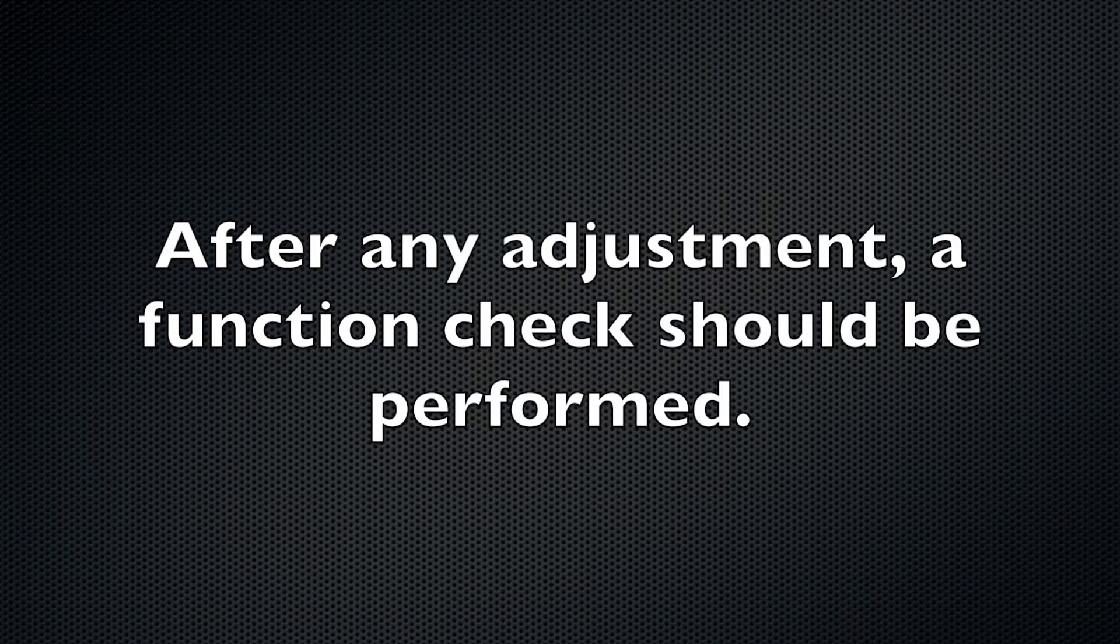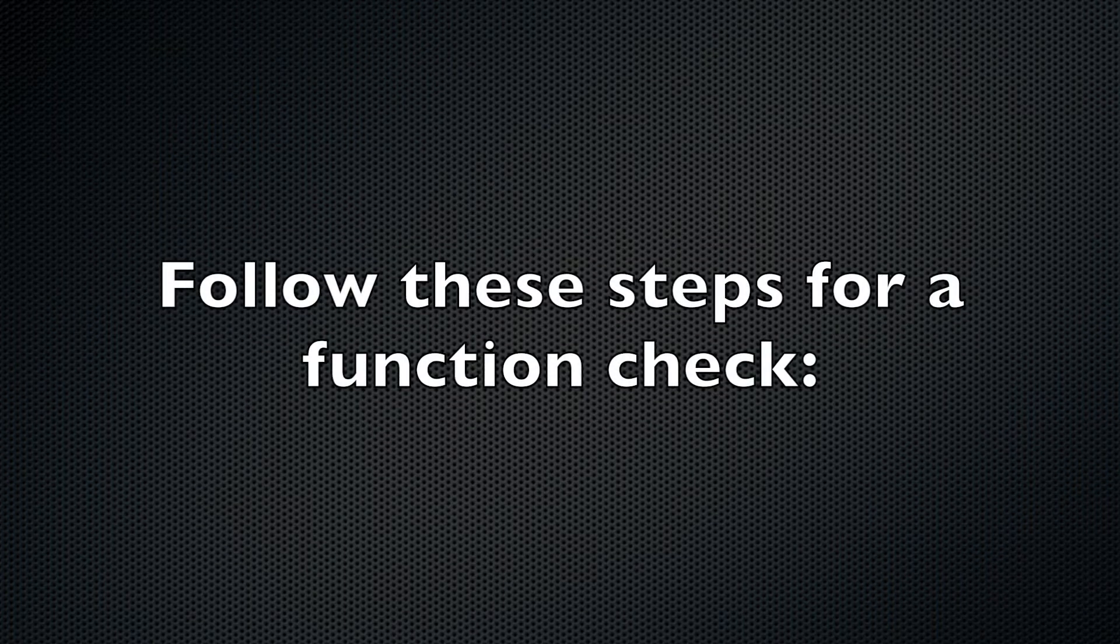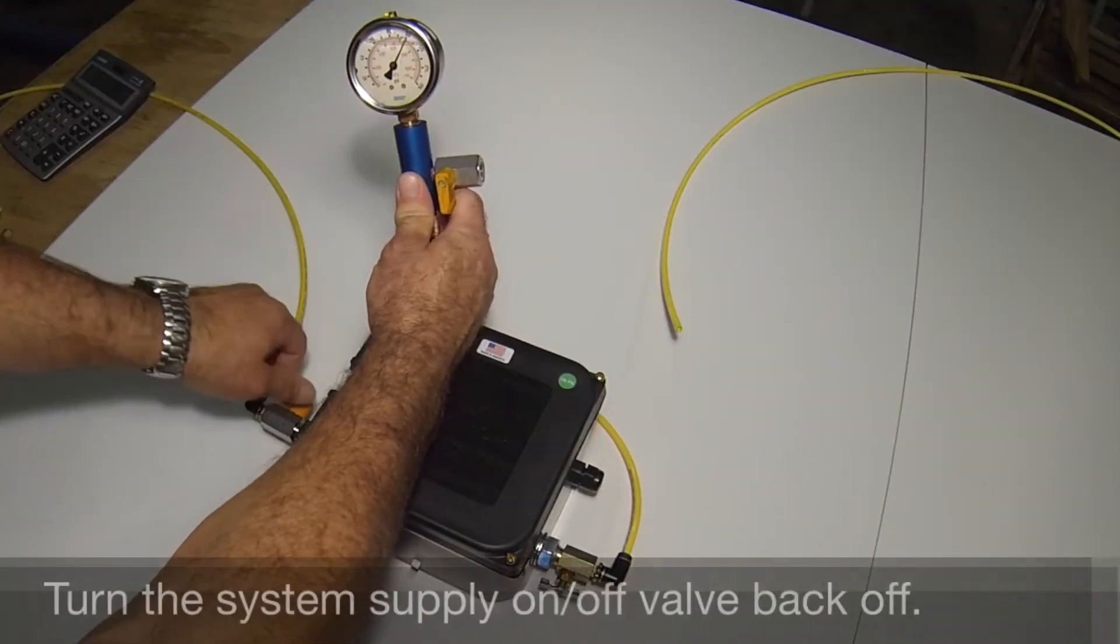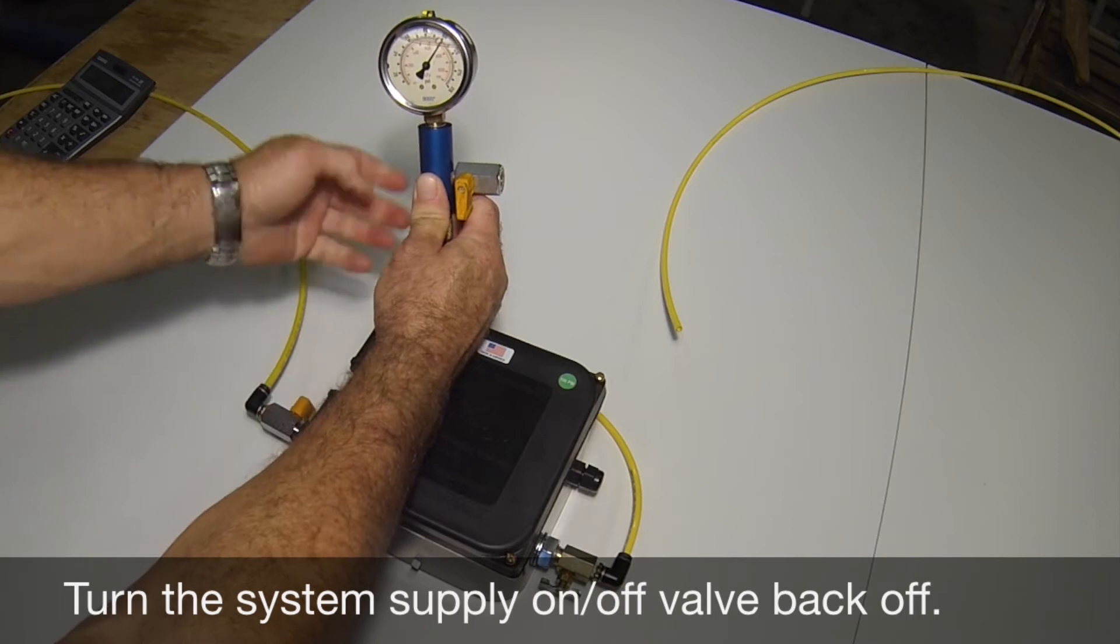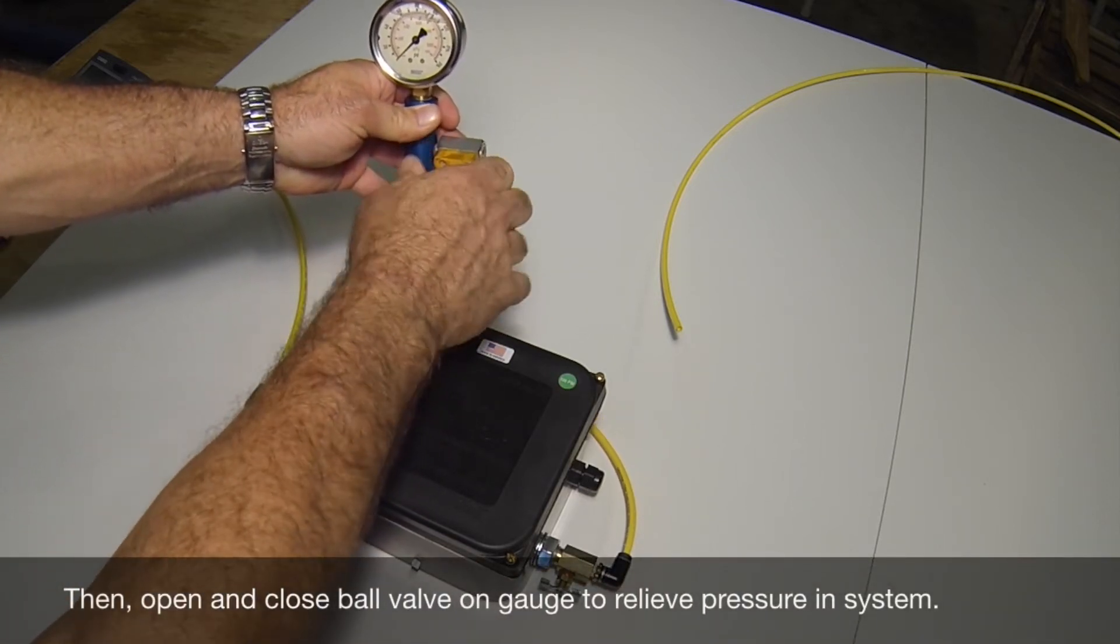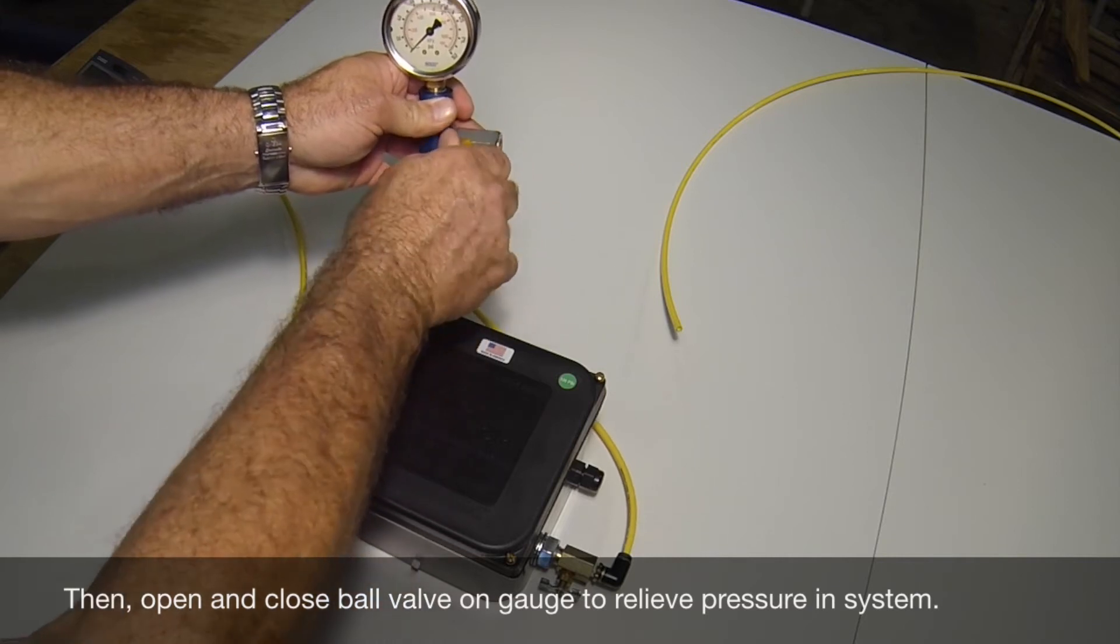After any adjustments, a function check of the regulator should be performed. To start the function check, start by closing the on-off valve on the supply side of the control box and open and close the ball valve on the test gauge to relieve any pressure in the system.